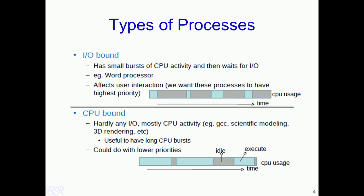To understand why this is required, consider a word processor such as Notepad or VIM. If we give this IO bound process a very low priority, suppose a user presses a key — because it has a low priority, it does not get the CPU very often, and therefore it would take some time before that key pressed by the user appears on the screen. This may be quite uncomfortable for the user. Therefore, we would like to give the IO bound process such as the word processor higher priority so that user interaction becomes more comfortable.